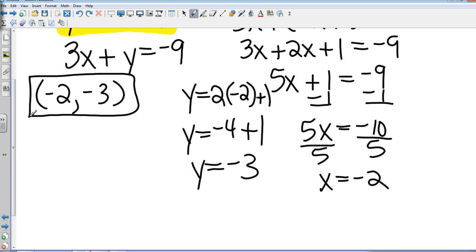You could have graphed that and you would have found that to be the intersection point, but this is a little easier way to do it. So let's look at one that might not be in slope intercept form for both of them. How about x plus 2y equals 6, and then 3x minus 4y equals 28.